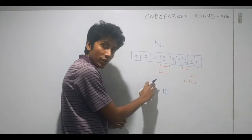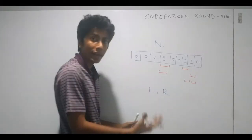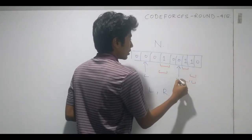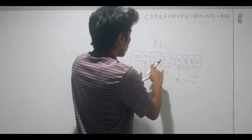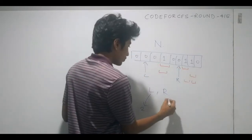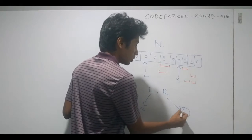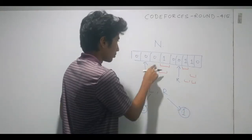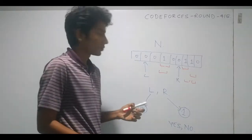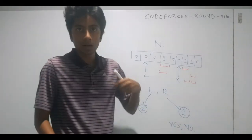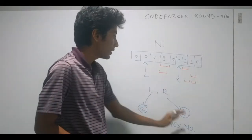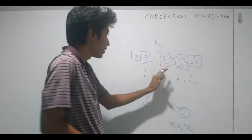You ask whether the nearest set element to the left index is closer to it than the nearest set element is to the right index. So if this is left and this is right, the nearest set element to left is distance two away, and the nearest set element to right is distance one away. So right is actually closer. You get a binary value — yes or no — telling you whether the right element is closer to its set element than the left one.